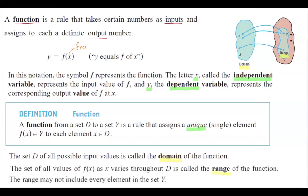The set of all output values is called the range of the function. As I mentioned before, it doesn't necessarily mean that the range and the codomain are the same. This larger set is the codomain, and the range is a subset of the codomain.